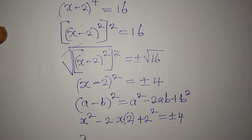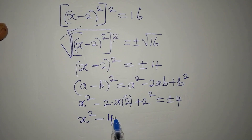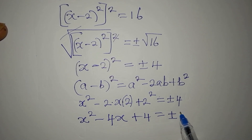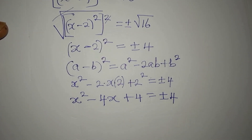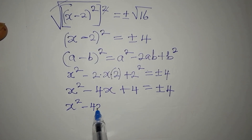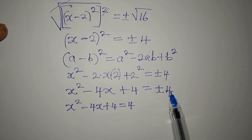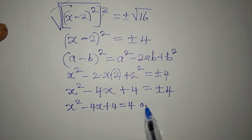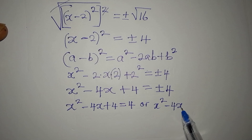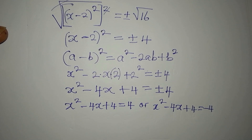So we have x squared minus 4x plus 4 equals plus or minus 4. This gives us two equations: equation one is x squared minus 4x plus 4 equals 4 (taking the positive), and equation two is x squared minus 4x plus 4 equals minus 4 (taking the negative).